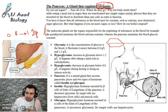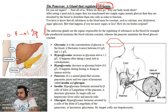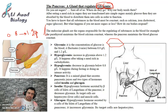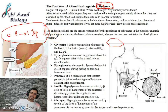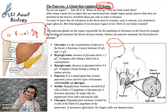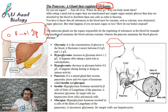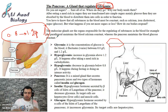Glycemia must remain within this normal range. Whether you have just eaten a meal or have been fasting for a long period, the blood glucose level must stay within this range. If it increases too much or decreases too much, there is a problem. Your body must regulate glycemia — it adjusts blood sugar whether you are eating carbohydrates or fasting.